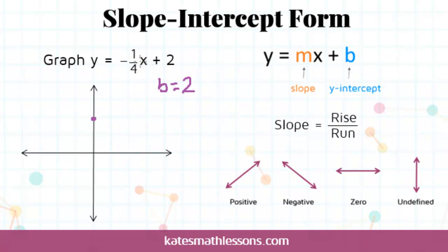The number in front of the x is a negative 1/4. That tells me that my m is negative 1/4. That's my slope. It's negative, so that tells me my line is going to be going down to the right. And I can think of the 1 as the rise and the 4 as the run. So since it's negative, I need to go down 1, instead of going up 1, I'm going to go over 4 to the right.